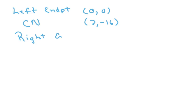So let's write all this down. We have our left endpoint, it's 0 comma 0. Our critical number is at 2 comma negative 16, and our right endpoint is at 4 comma 16.